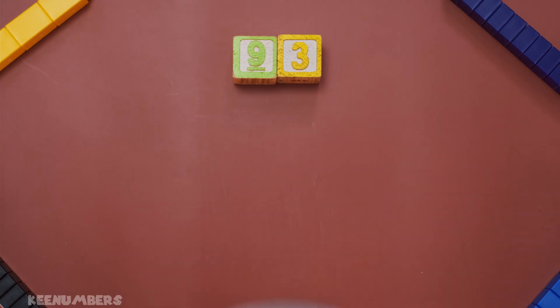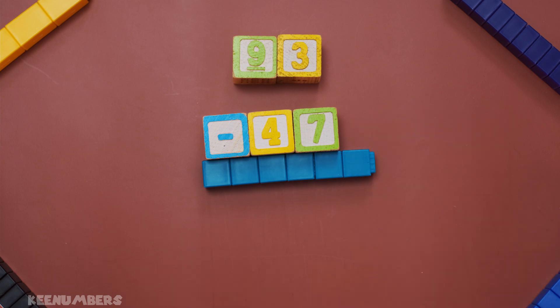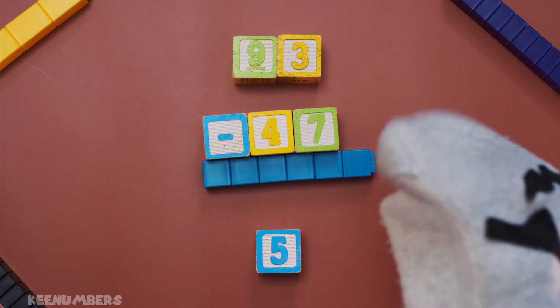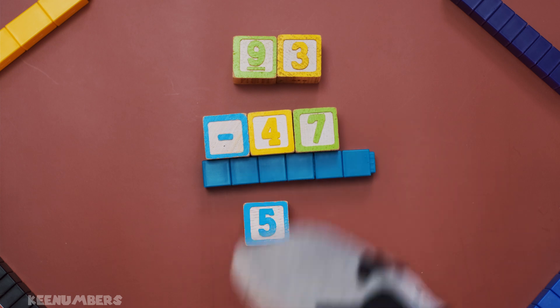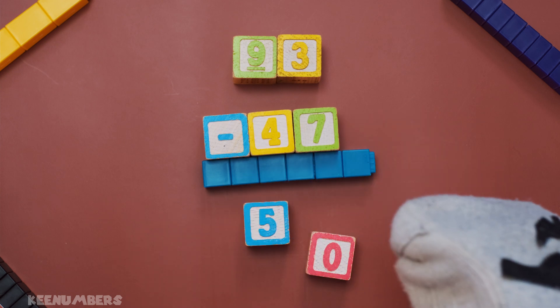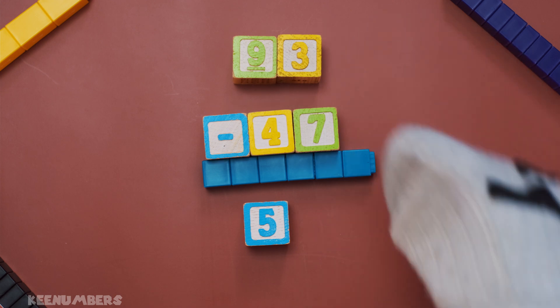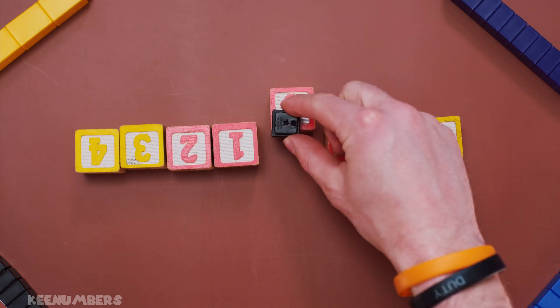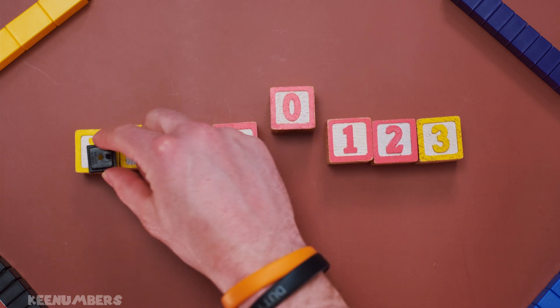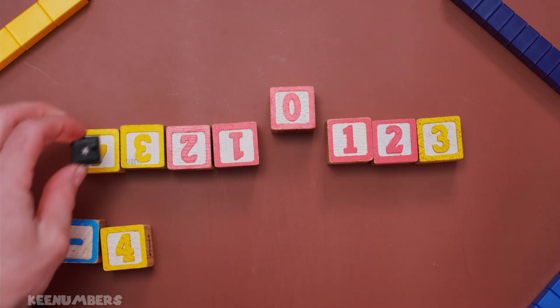93 minus 47. Nine tens minus 4 tens. That's 5 tens. Think of it like 50. Yarr, har, har, har. But you have over here 3 minus 7. So you go backwards from 3, 7 spaces. That means you'll get negative 4.